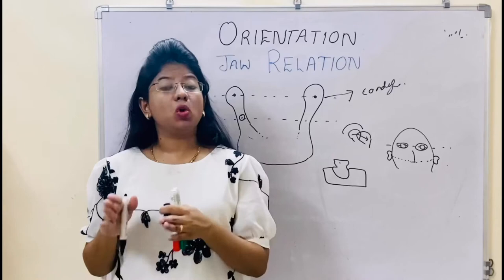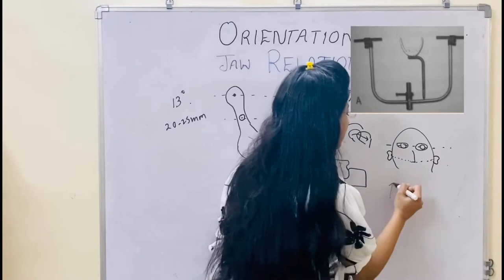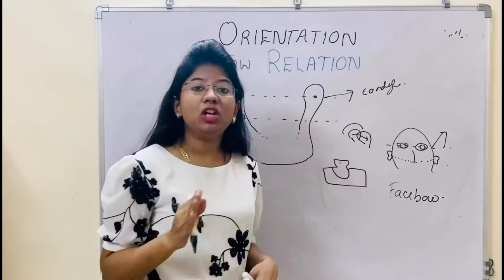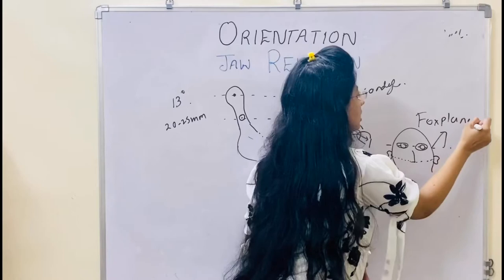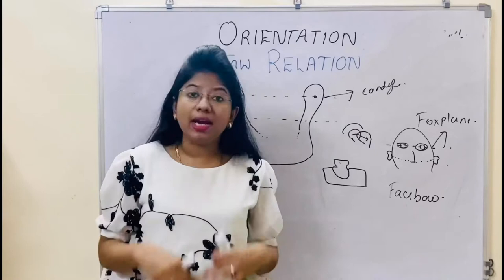In this Fox plane method, we are not recording the terminal hinge axis. For recording the terminal hinge axis, you require a face bow. So there is a big difference: the Fox plane is used in the clinics for orienting the occlusal plane, while for recording the orientation relation, you use a face bow. That is the major difference you should know.